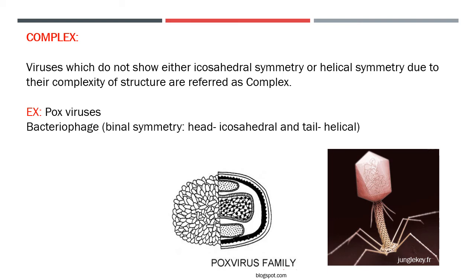That covers icosahedral symmetry. The last category is complex symmetry. Viruses that do not show either icosahedral or helical symmetry due to the complexity of their structure are referred to as complex. Examples include poxvirus and bacteriophage. Bacteriophage has what is called binal symmetry — the head is icosahedral and the tail is helical — so it cannot be classified as purely icosahedral or helical, and is classified as complex. Poxvirus similarly has no structure resembling icosahedral or helical symmetry.